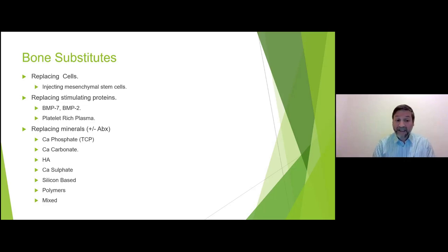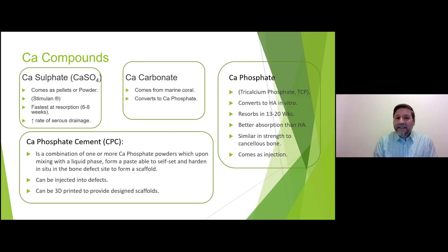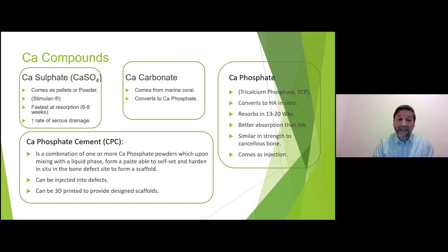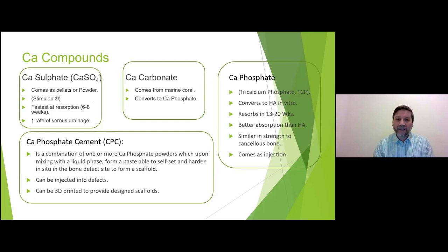Calcium sulfate is the most commonly used; it comes as pellets or powder and the common product is Stimulan. It allows you to add antibiotics, has the fastest resorption at six to eight weeks, and has a high risk compared to others of serious wound drainage — which is a sterile byproduct of the body breaking down the calcium sulfate. Calcium carbonate is not commonly in use and converts in the body to calcium phosphate.